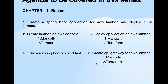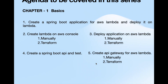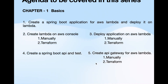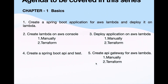Welcome to this video. This is the third video of the series. We have created the Spring Boot application for AWS Lambda and also created a Spring Boot API. We just need to do some changes in our application from the last video. Today we will deploy the application on AWS console, create a Lambda, and deploy it manually. Later we will create Terraform scripts for automation and also create an API Gateway for this Lambda to test our application.